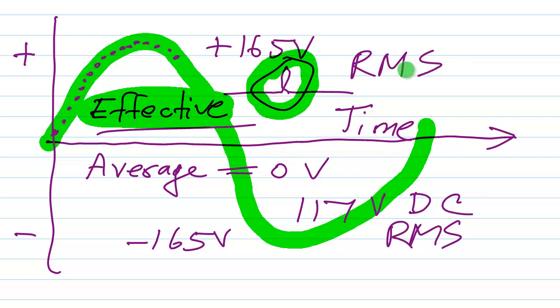So you start by squaring the value of each point, then you take the average of all of those points, and then you take the square root. And you might think, well doesn't that just give you the same thing as you would get with the average? And the answer is no, it sure doesn't.